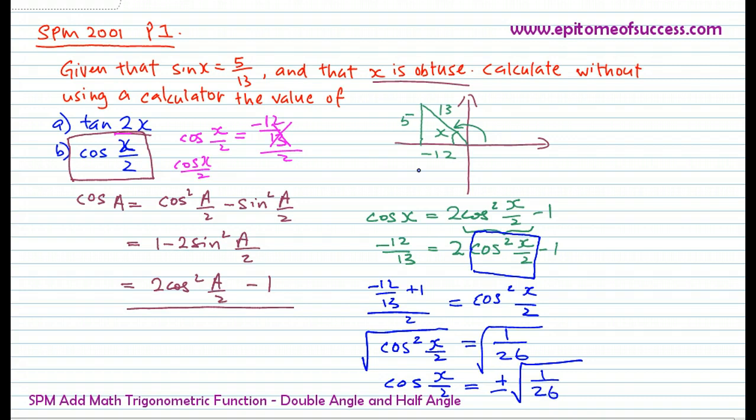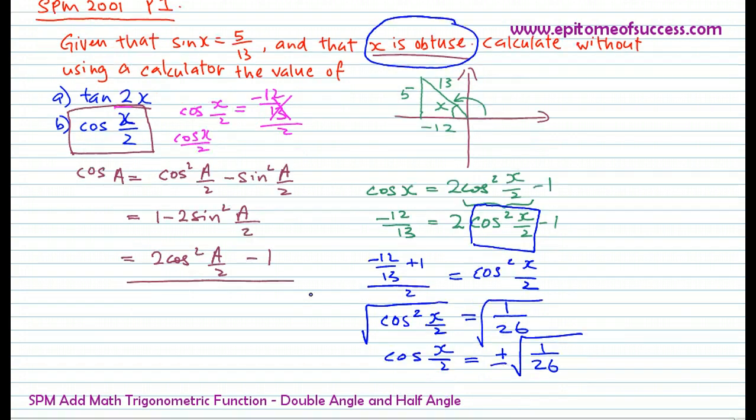However, look at this. It says x is obtuse. Since x is obtuse and it is in the second quadrant, is cos positive or negative in the second quadrant? Cos is negative in the second quadrant. Now you may be tempted to pick the negative, but there's one more thing that you have to take into consideration. It is a half.